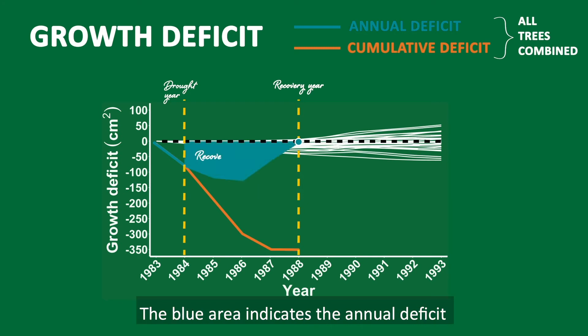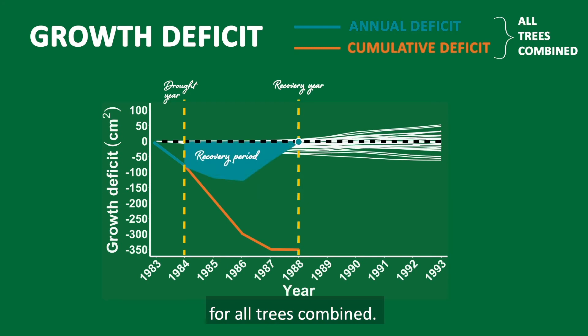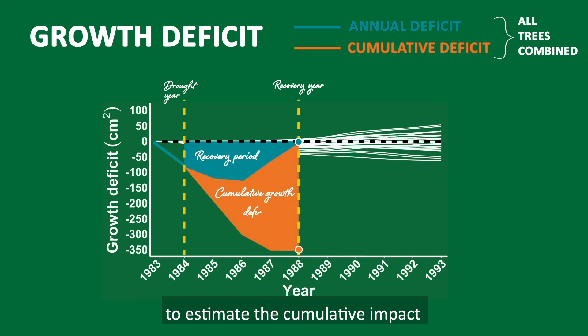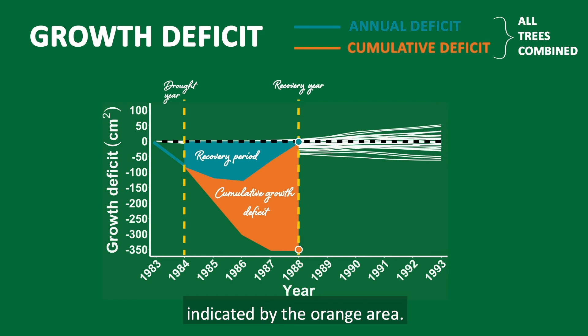The blue area indicates the annual deficit for all trees combined. We could then add up this annual deficit over the four years to estimate the cumulative impact on tree growth caused by drought, indicated by the orange area.